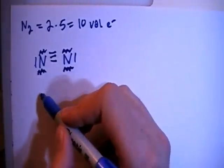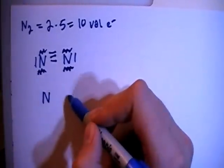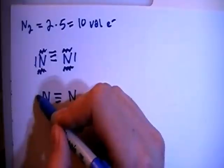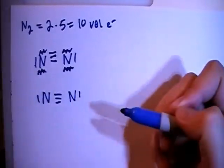So let's just redraw it because it's kind of messy. Two nitrogens, triple bond, and then there's the non-bonding pairs on each side.